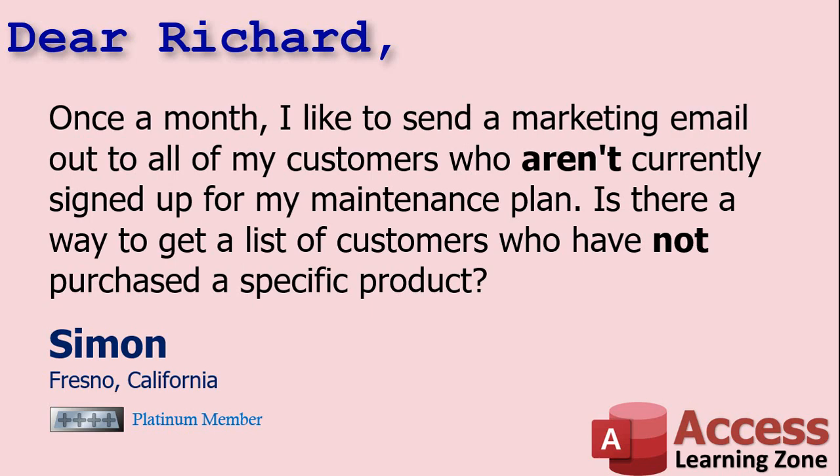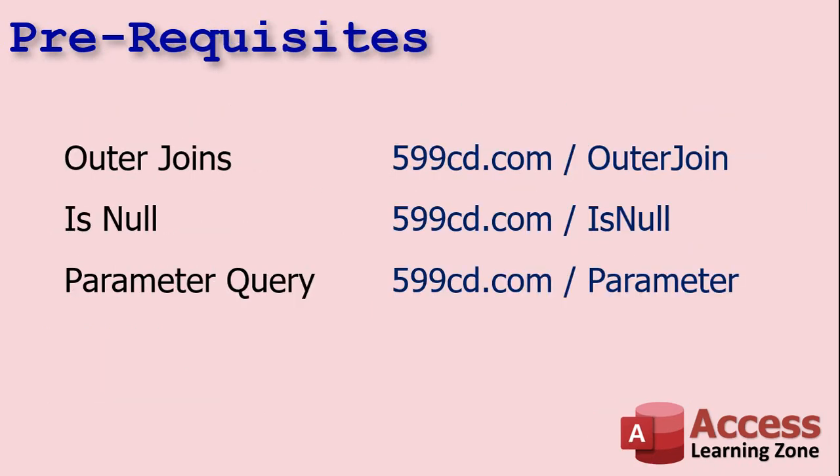Before we get into it, if you don't know these things go watch these videos first. If you don't know what an outer join is, go watch my outer join video. If you don't know what IS NULL is, go watch that video. And optionally, if you don't know what a parameter query is, go watch that video too. All three are free videos — I'll put links down below in the description.